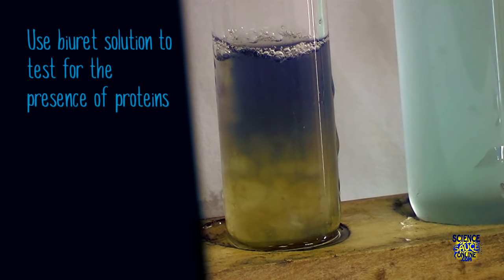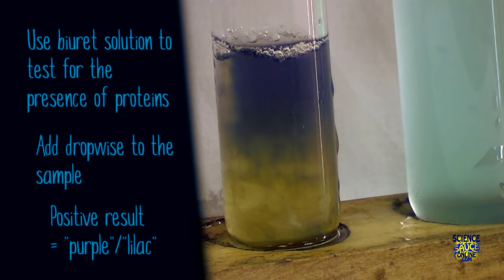So to summarize, use biuret solution to test for the presence of proteins. Add it dropwise to your samples and it'll turn purple or lilac color if protein is present.